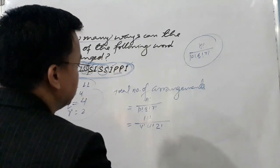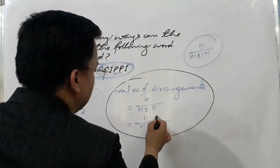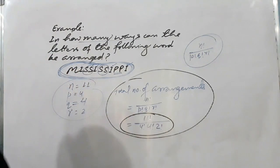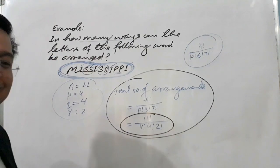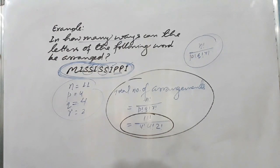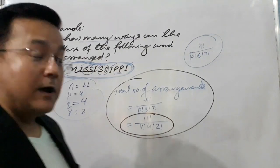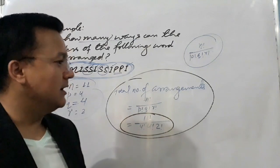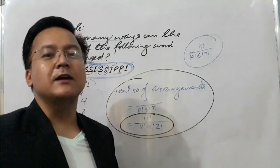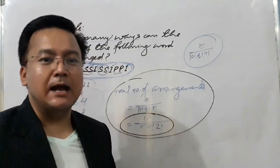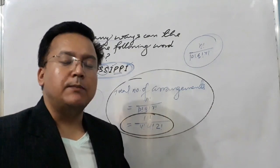So the answer is 11 factorial upon 4 factorial times 4 factorial times 2 factorial. You can calculate this value. That is the total number of different arrangements of the letters of MISSISSIPPI. It's not difficult — just use this formula whenever objects are not all different. If you have any problem, write in the comment box. If you are new, please subscribe and share. Thank you for watching, bye bye.